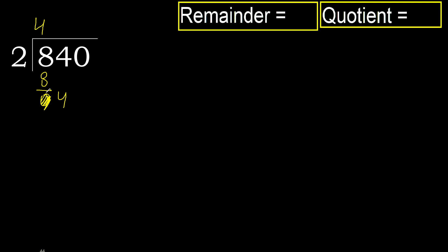Eliminate 0 on this side. Bring down 4. 2 multiplied by 3 is 6, which is greater. 2 multiplied by 2 is 4, which is not greater.